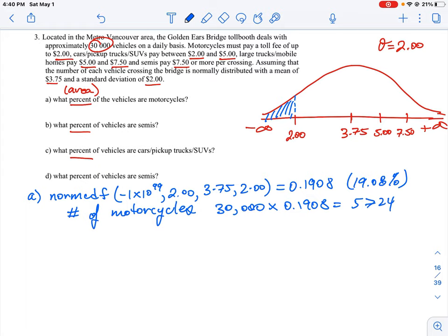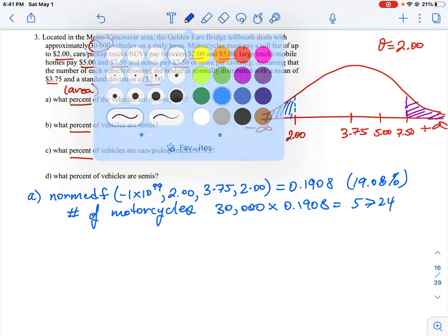Let's look at another question: what percent of the vehicles are semis? To do this one, we need to know where the semi trucks are. The semi trucks are anything that pays $7.50 or more. They're not going to be that many of them, they're on the edge of this other part of the curve. So this is the area of everything that is $7.50 and above.